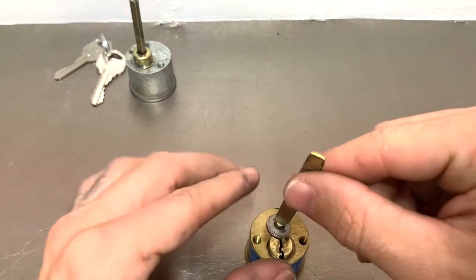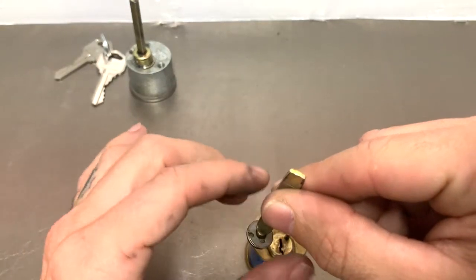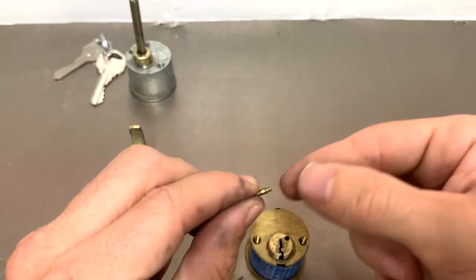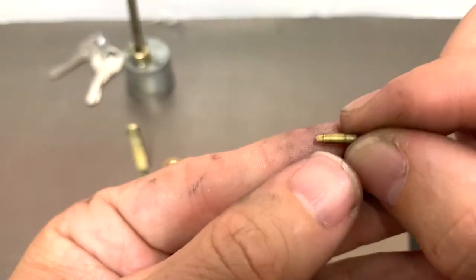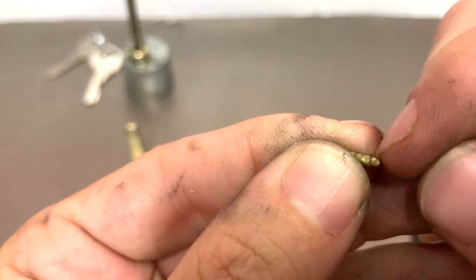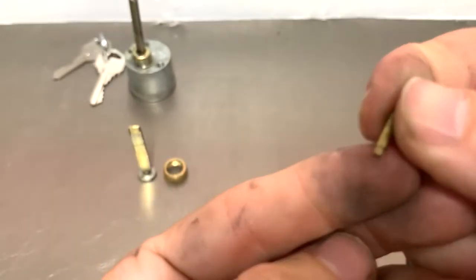You'll remove this tailpiece. You could just leave this little piece attached, set it aside. You will have this pin that comes out.